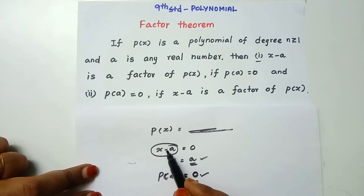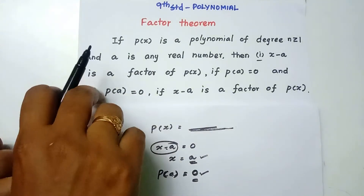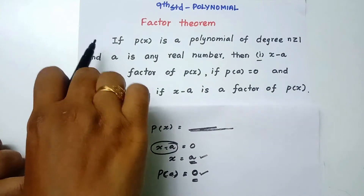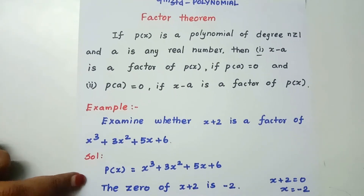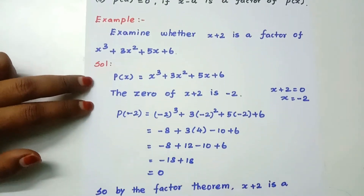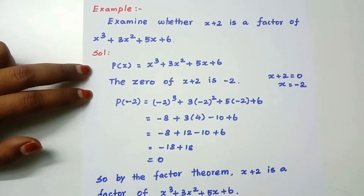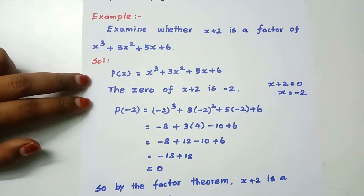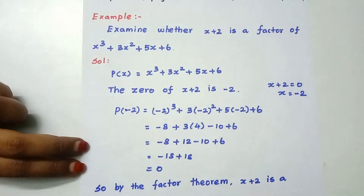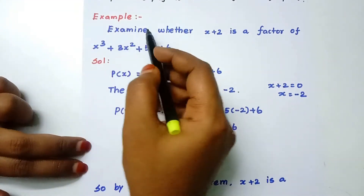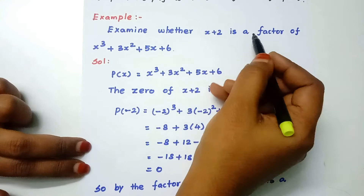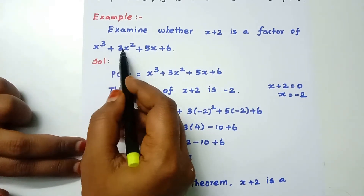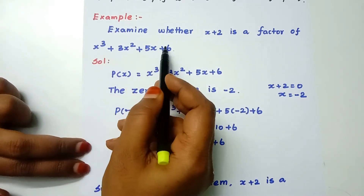This is the Factor Theorem. Let's see an example. Examine whether x plus 2 is a factor of x cubed plus 3x squared plus 5x plus 6.